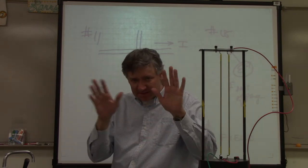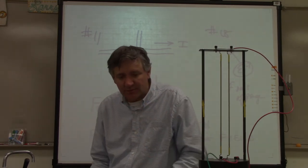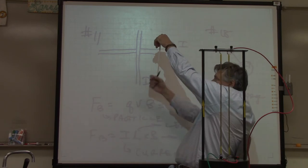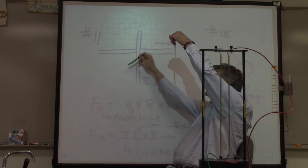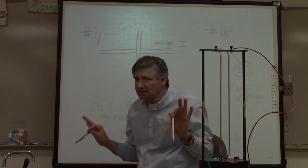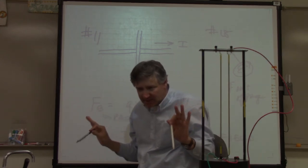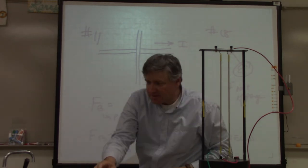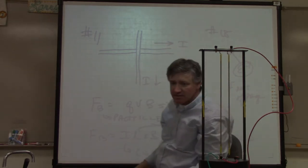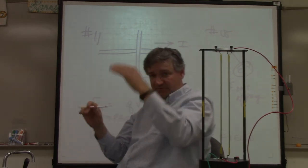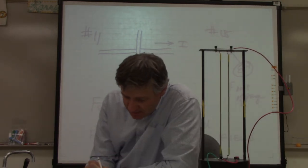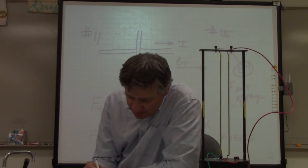Let's talk about number 11 and make sure everybody's cool with the two versions of the right-hand rule. You've got a wire on top with a current going this way, and a wire underneath. You want to find the net magnetic field in between the two of them — no electrons or protons, just the net magnetic field. From the top wire, the magnetic field is going to be going to the right.